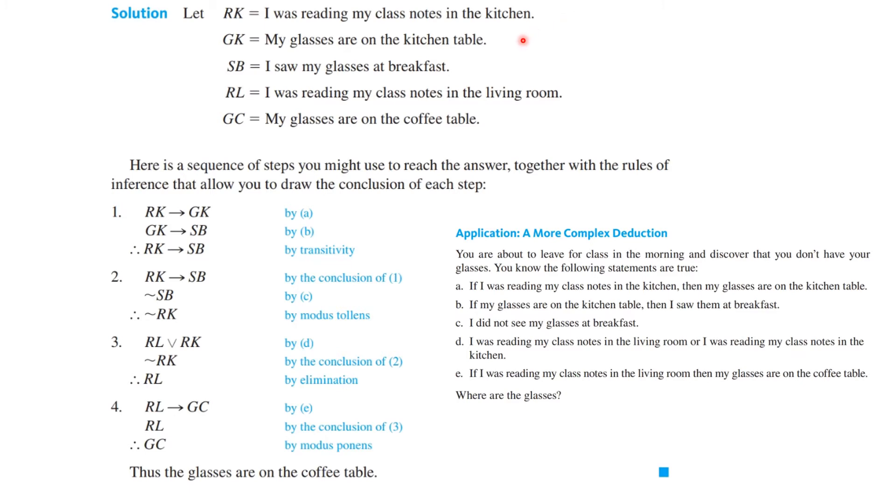RK: I was reading my class notes in the kitchen. GK: My glasses are on the kitchen table. SB: I saw my glasses at breakfast. RL: I was reading my class notes in the living room, and GC: My glasses are on the coffee table. So anyway, we start.